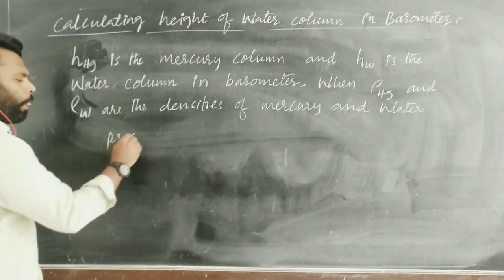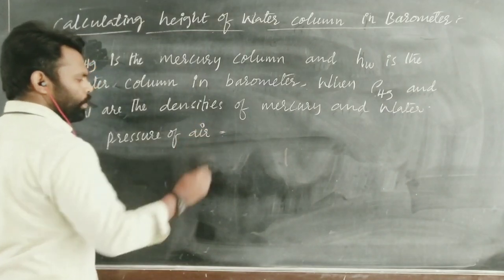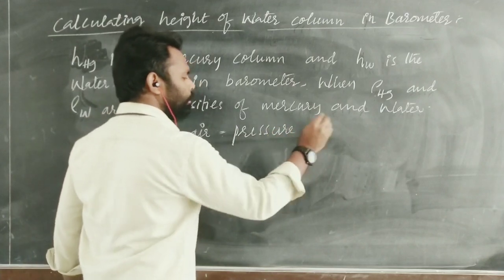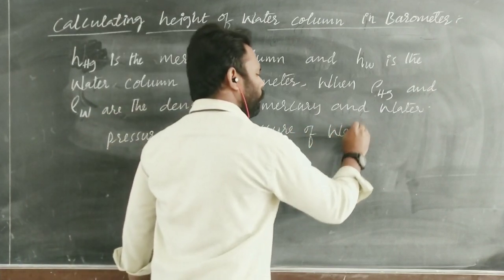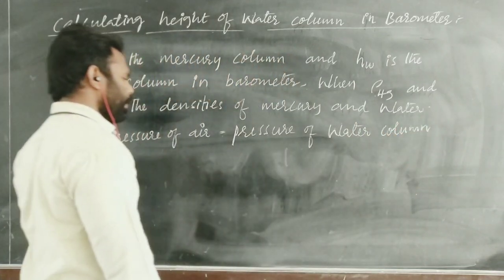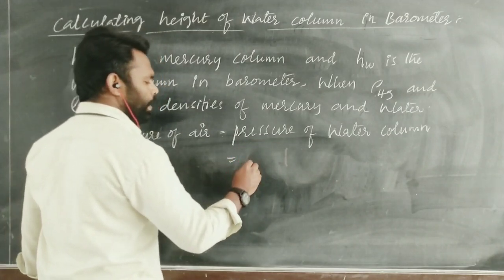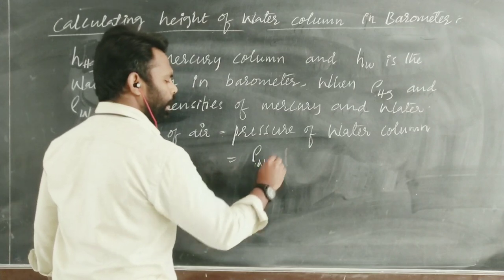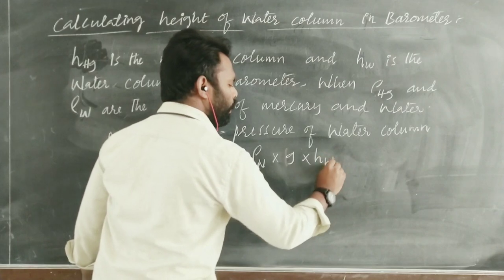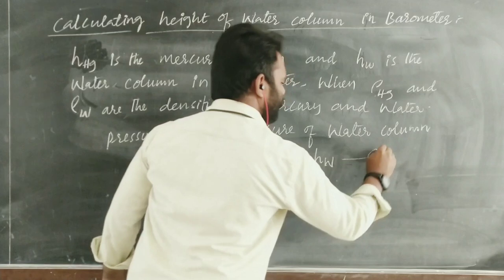Pressure of air is equal to the pressure of the water column. So this is equal to the density of water multiplied by acceleration due to gravity multiplied by the height of the water column. Let us represent this as expression 1.